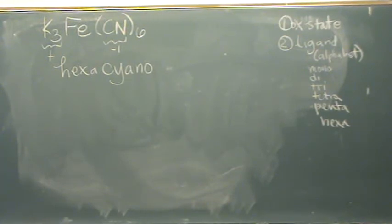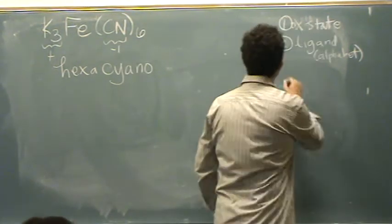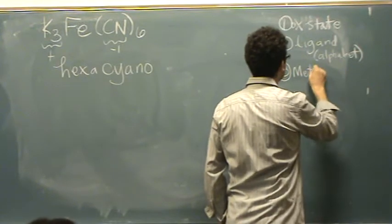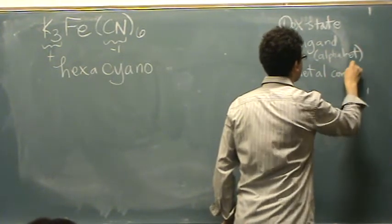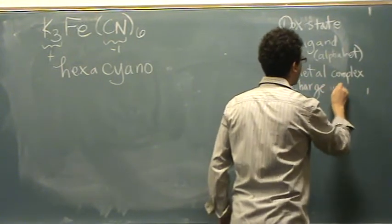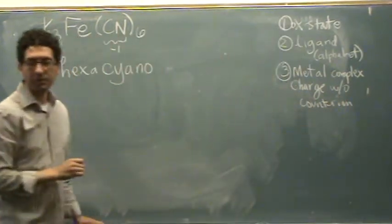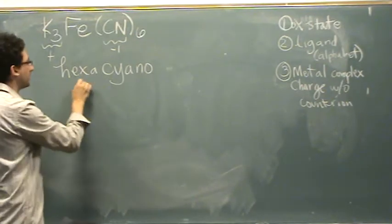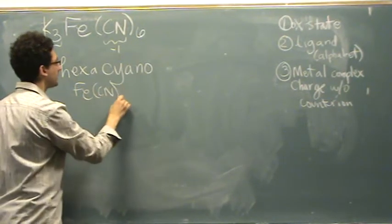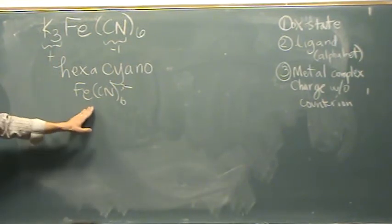So that's the second step. The third step is really to look at the metal complex. Metal complex charge without the counter ion. So it's Fe(CN)₆³⁻. If this is a negative charge, it's named differently than if this is a positive charge. That's the difference.